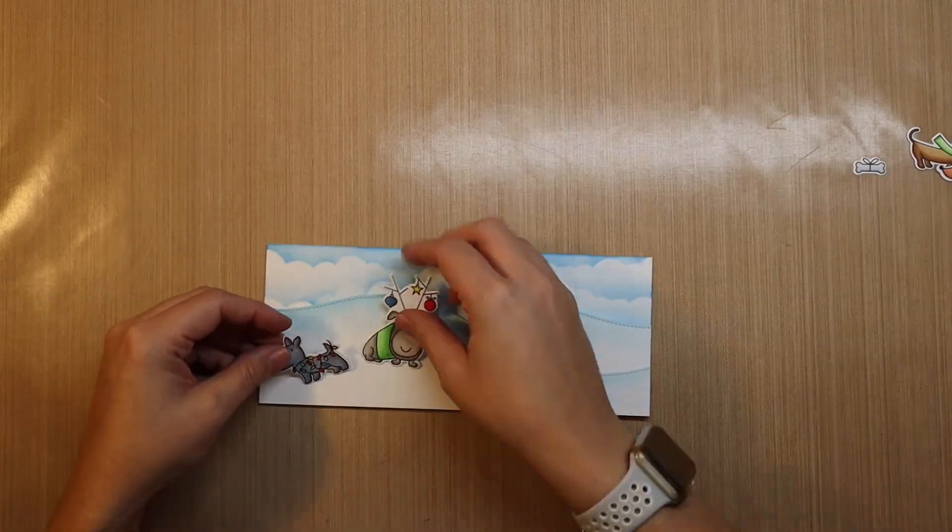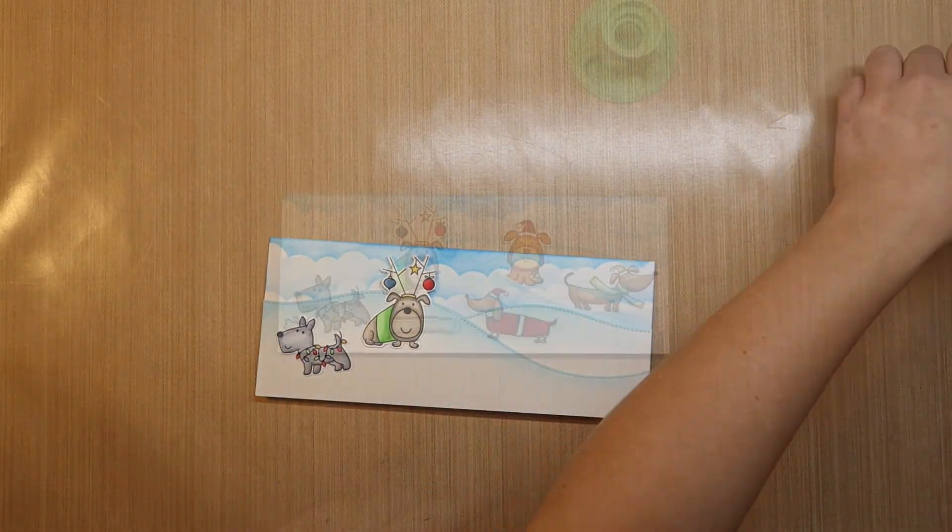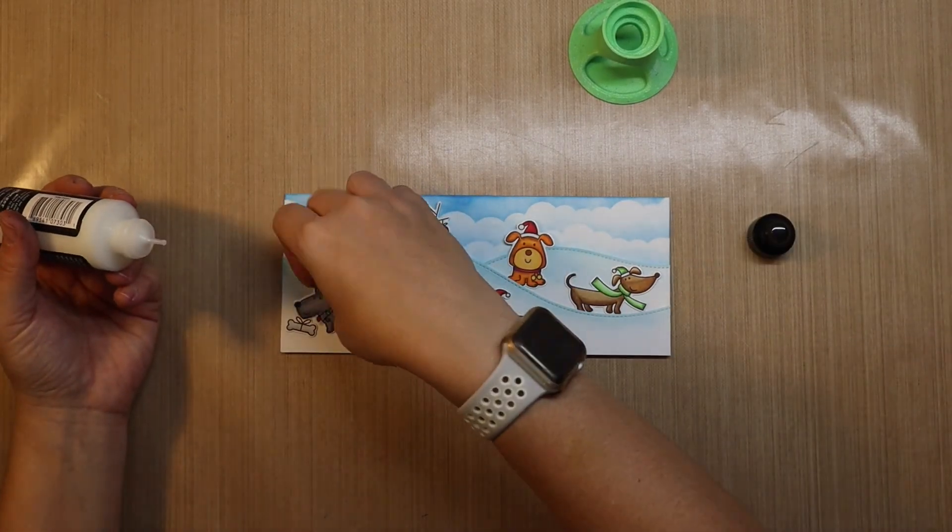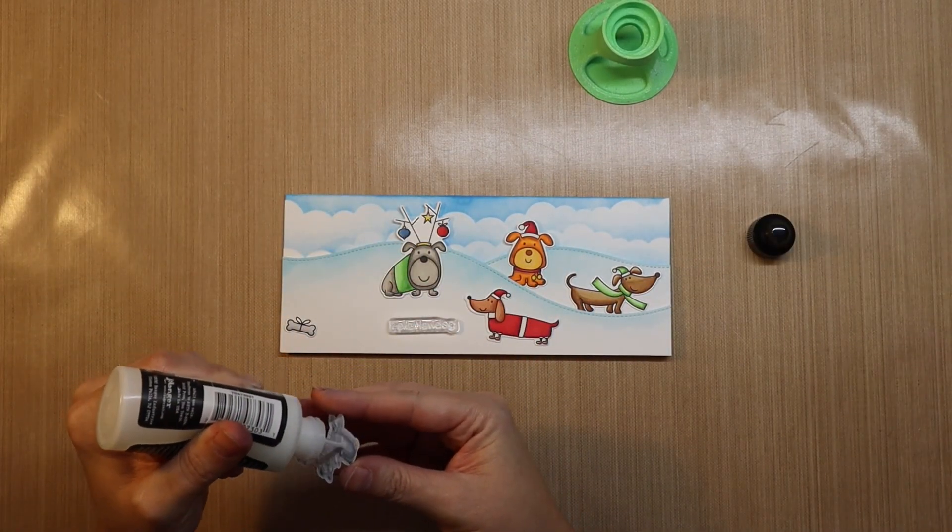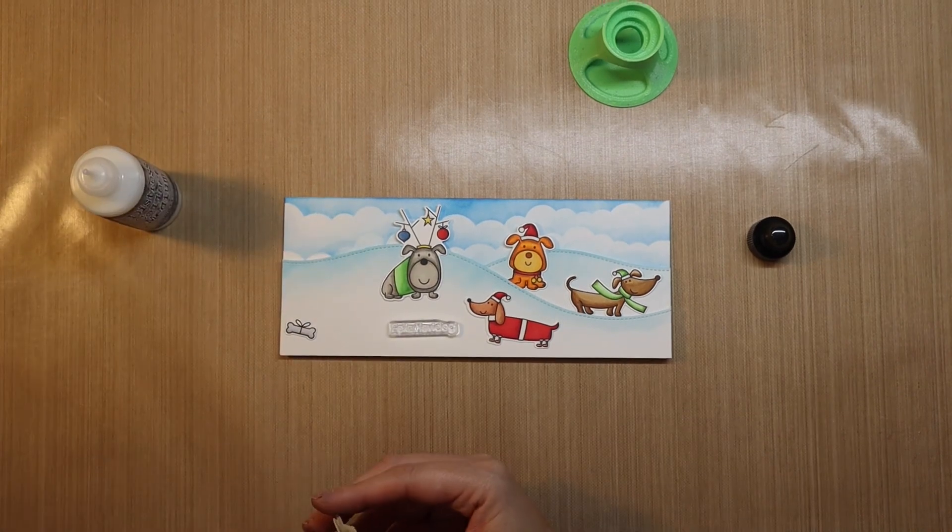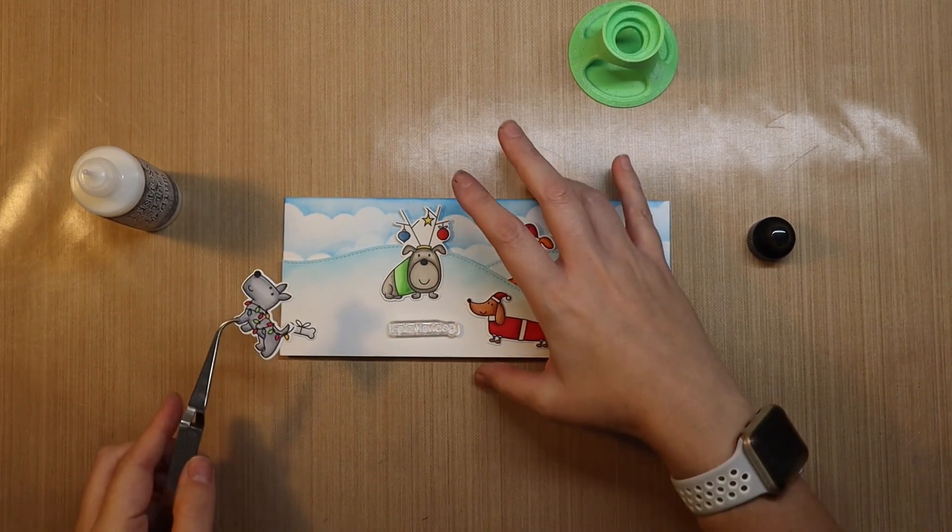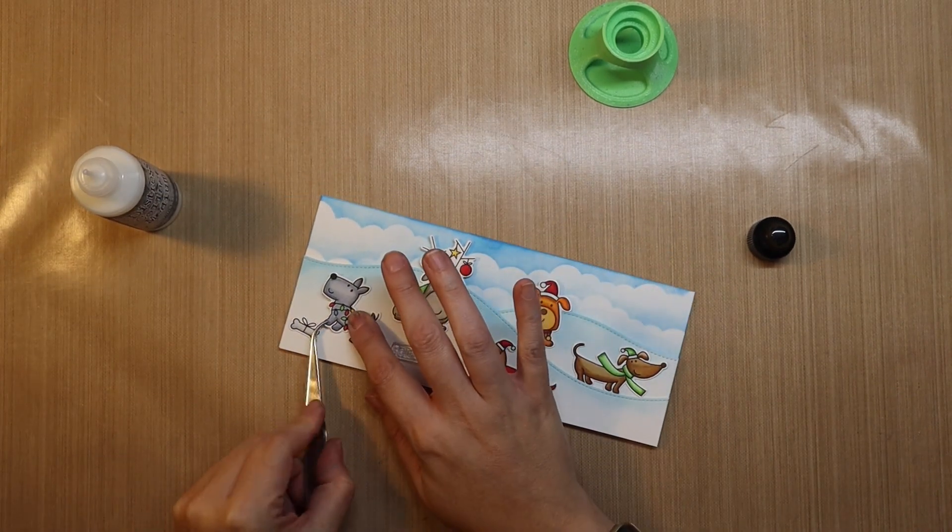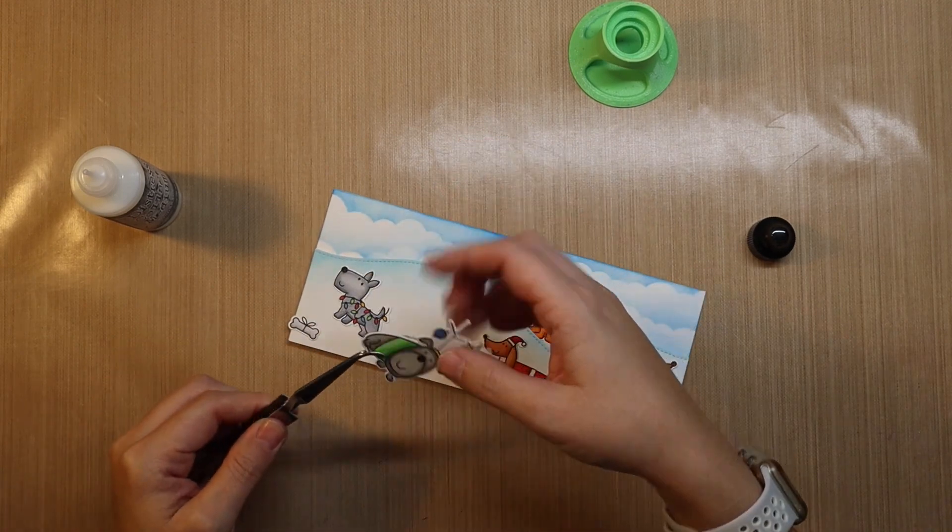And then I move on to positioning my critters across the card. I also put down my Feliz Navi Dog stamp, position it where I want it to go. So I can make sure I get these pups placed around that sentiment.